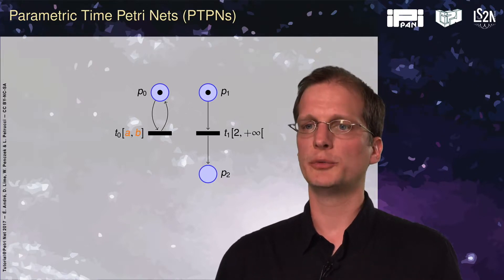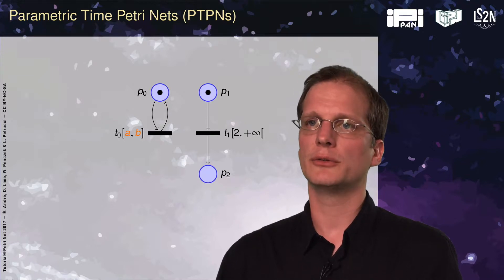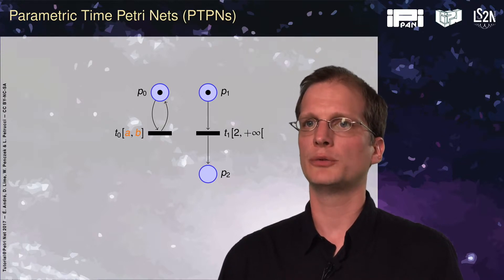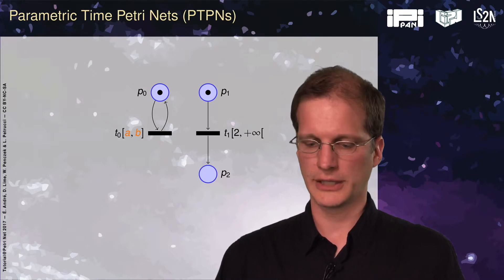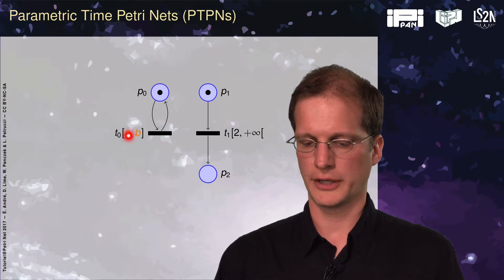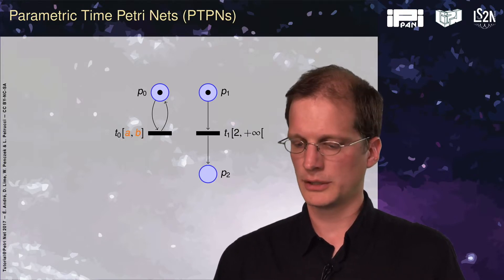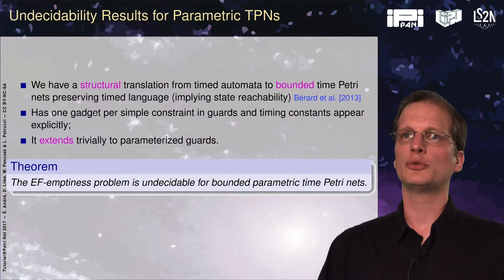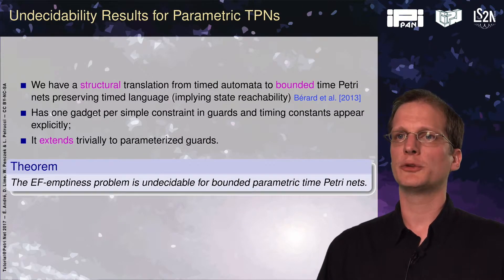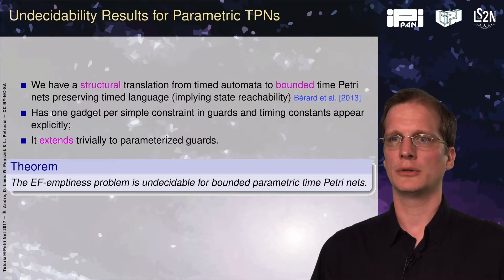How do we put parameters in this model? We simply change the endpoints of the intervals to parameters, and we would get parameters A and B here. This is very close to parametric timed automata that we have seen in another sequence.